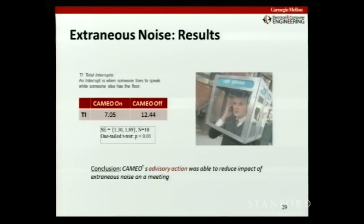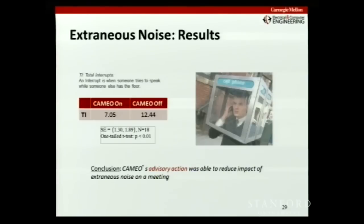With Cameo mediating, there were only seven interrupts in a four-minute meeting, as opposed to 12.5 without Cameo mediating. By interrupts I mean someone talks over me and cuts me off. Just with that short 'noisy' notification, we were able to cut down the number of interrupts by half. The same people, the same timeframe — we just compared Cameo mediating and then Cameo not mediating, and this was balanced. We can conclude that Cameo's advisory action was able to reduce the impact of extraneous noise.